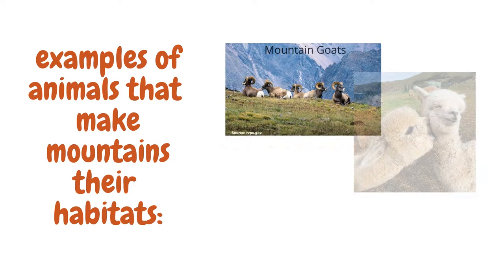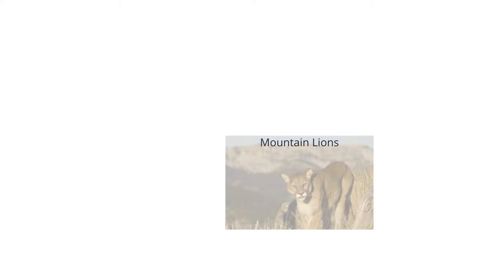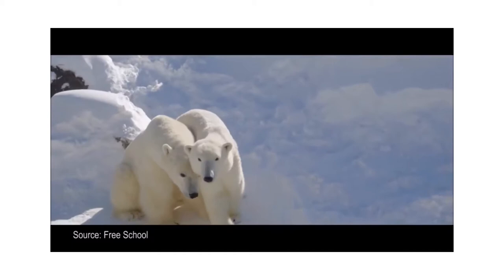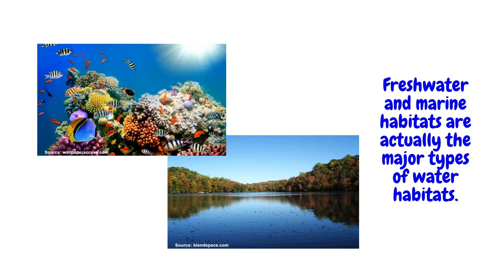A mountain is an area of land that rises much higher than the land around it. Examples of animals that make mountains their habitats are mountain goats, alpacas, and mountain lions. Very cold places on earth such as the polar regions may also serve as land habitats for some animals, such as the polar bear.